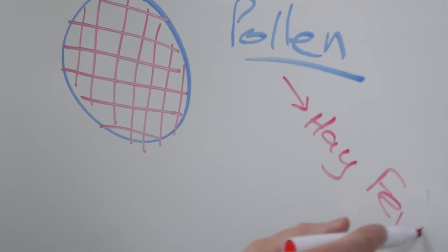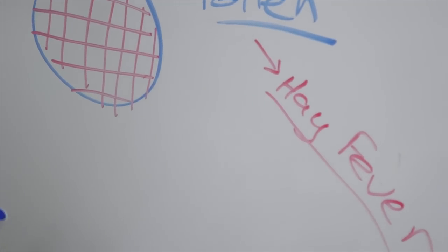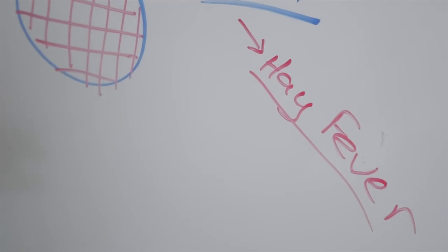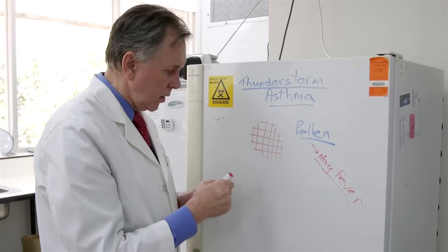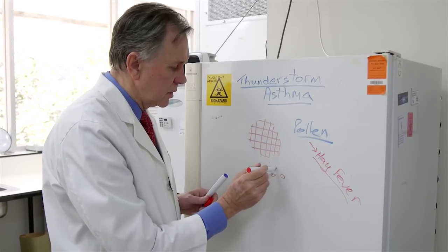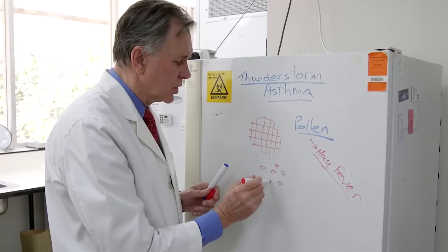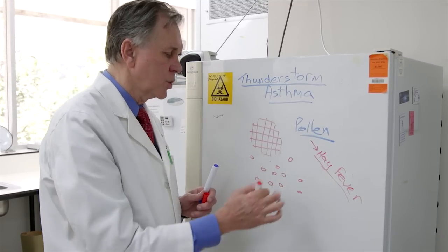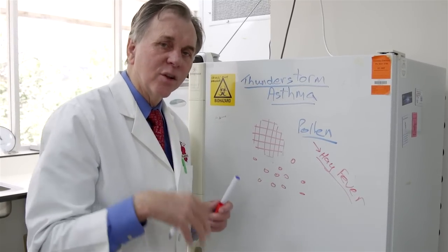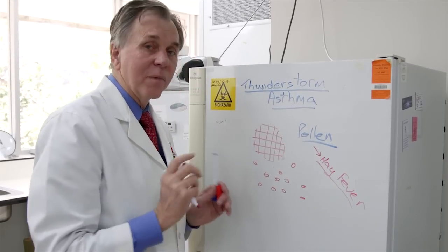So you might get people who don't even know that they've got asthma. Then under the right conditions, this outside of the pollen granule will just pop open, and now you see we've got millions and millions of these little tiny microscopic particles floating around in the air. And so they're much worse because they actually penetrate right down into the lower airways and have a much bigger effect.